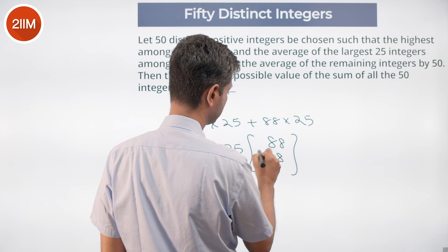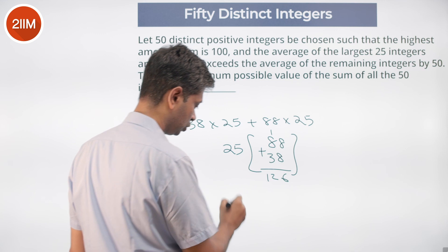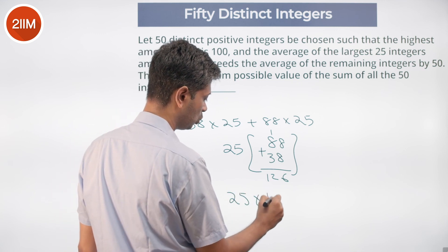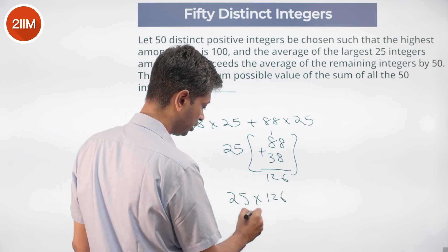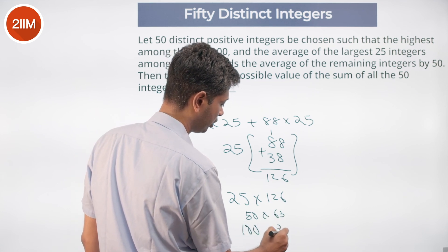88 plus 38 is 126, times 25. 25 into 126, or 50 into 63, or 100 into 31.5.